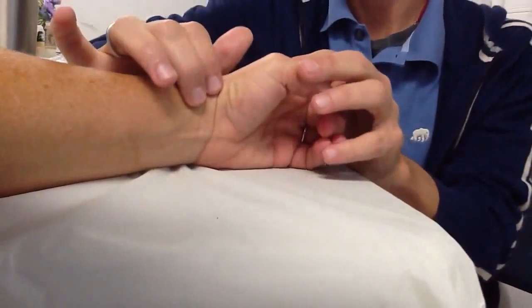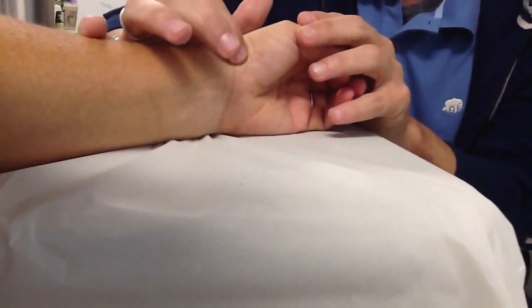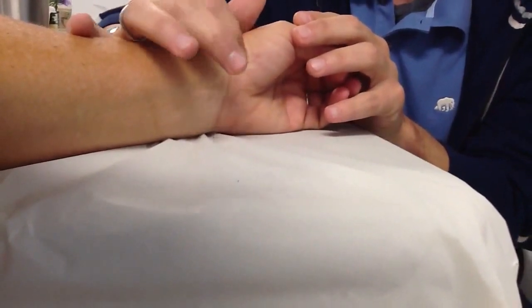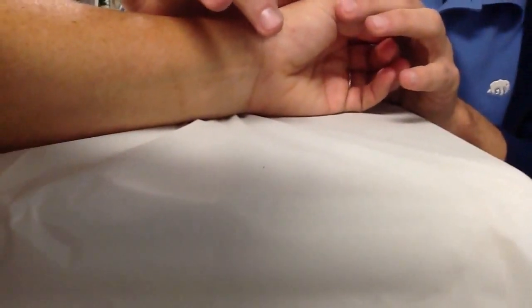So from here, I tend to kind of roll the wrist a little bit and I slide up to find the neuropsychological position. Again, very slight, gentle pressure, find the space in the bone.